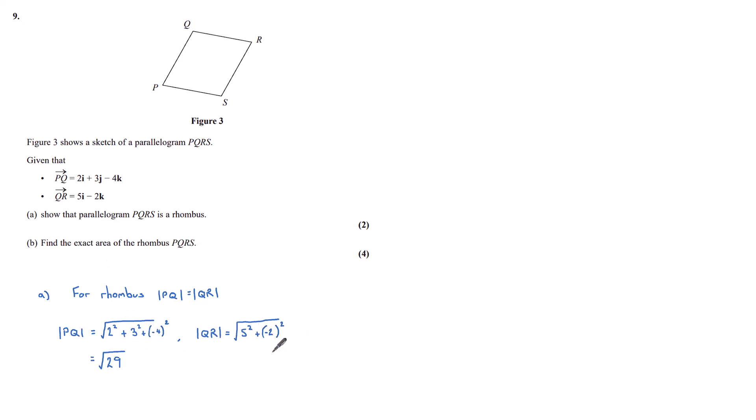We can do the same for QR to find the modulus of QR. That would be the square root of 5 squared plus minus 2 squared, which again gives us root 29. So since the modulus of PQ equals the modulus of QR, PQRS is indeed a rhombus.